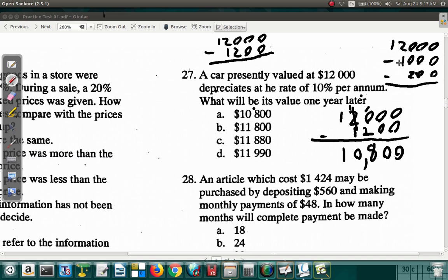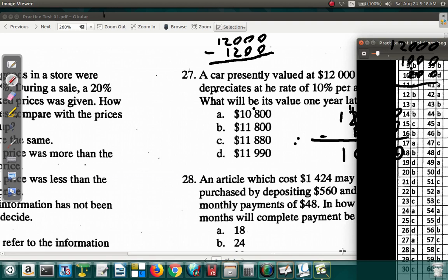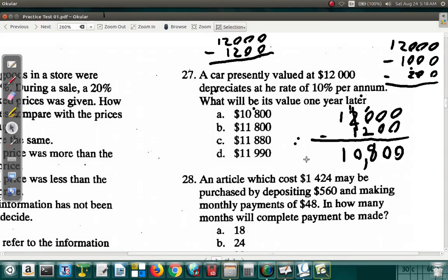Here we would have 12,000 minus 1,000 is 11,000. 11,000 minus 200 would be 10,800. So the answer for 27, A, right? So 27 is A.